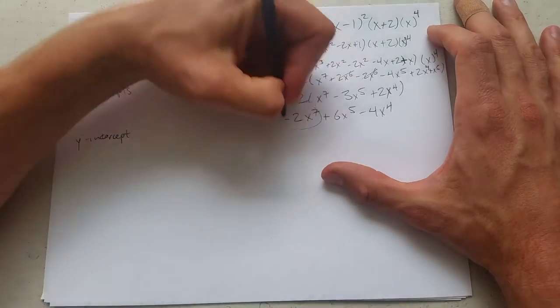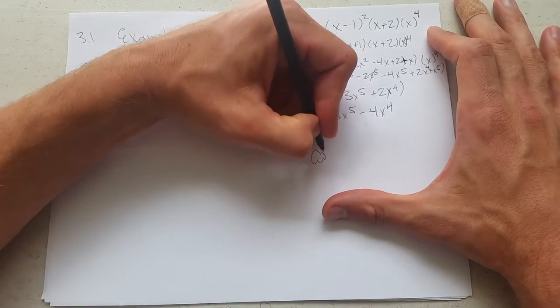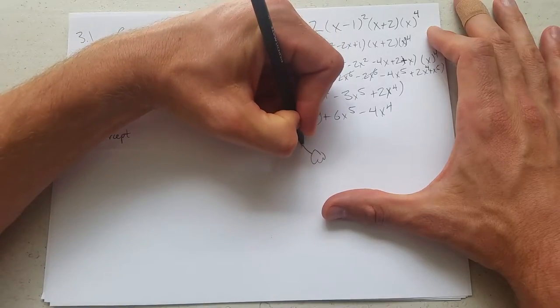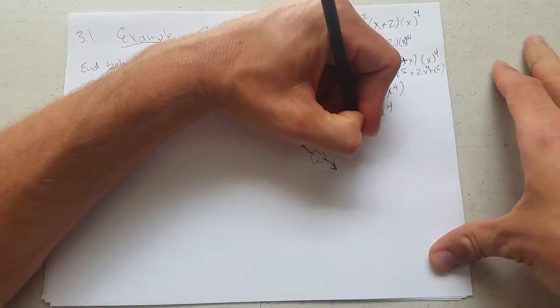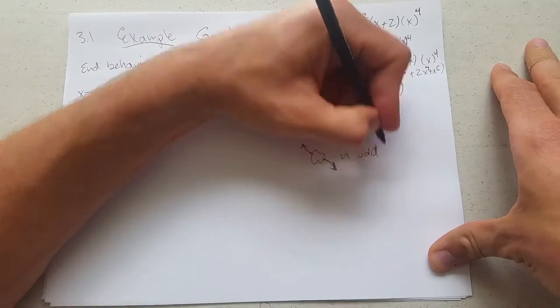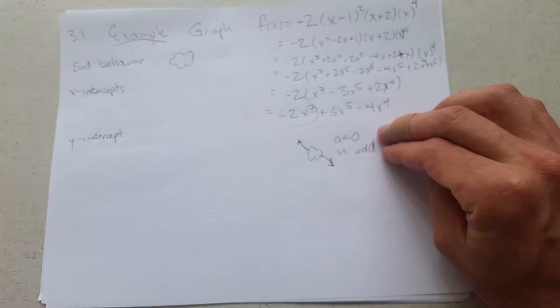Going back to end behavior. Negative. Odd. Odd means they don't match. Negative. It's going to look like this. That was a lot of work to figure out these two.